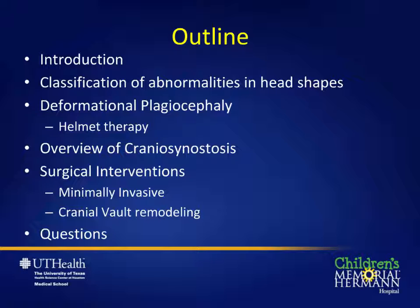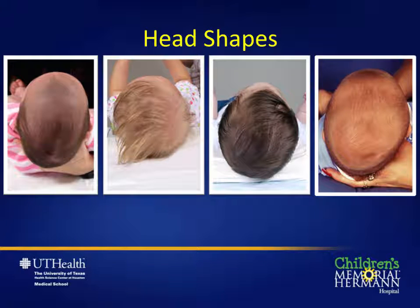Our talk today will focus on an overview of all types of abnormal head shapes and the anatomy that underlies them. We'll then discuss deformational posterior plagiocephaly and therapies for treating it including helmet therapy. Following this, we'll discuss the causes and types of craniosynostosis and the reasons surgical treatment is necessary. We'll also cover minimally invasive endoscopic release and full cranial vault remodeling surgery, and finally open it up for audience questions.